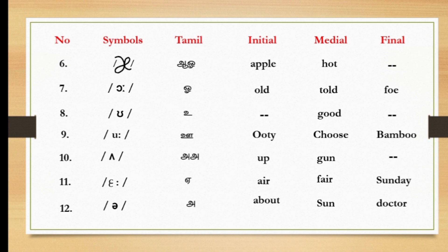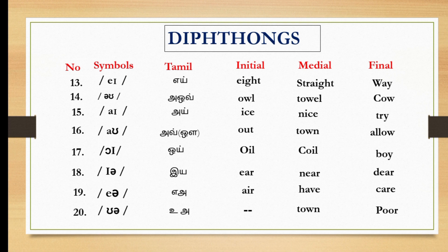Eleventh one, aah, as in air, fair, Sunday. Twelfth one, aah, as in about, sun, doctor. Next, we are going to see about diphthongs. There are eight diphthongs in English phonetics. Let's see it one by one.